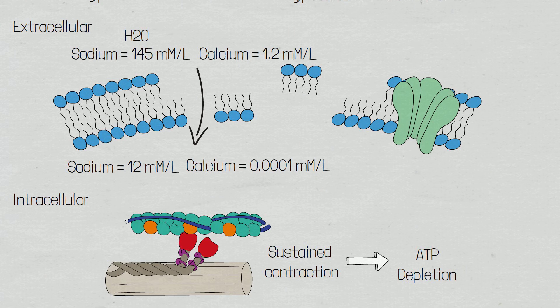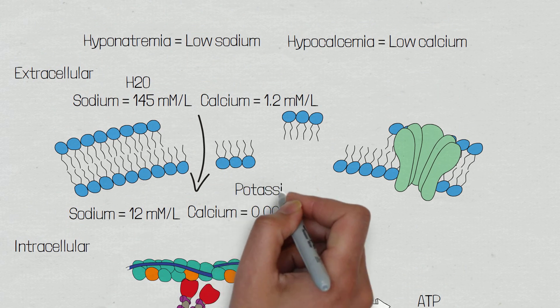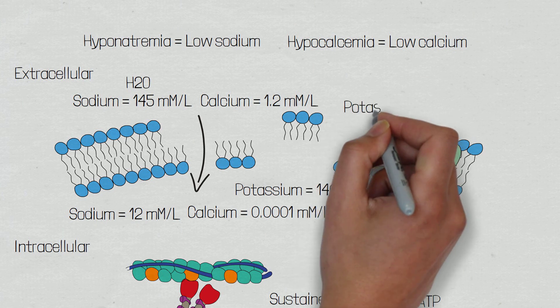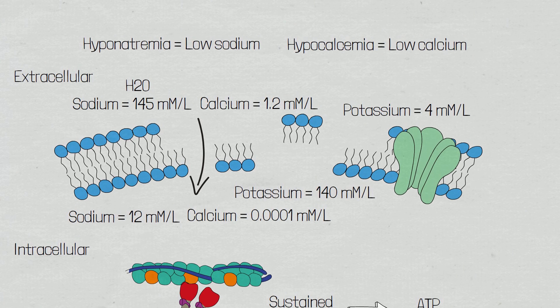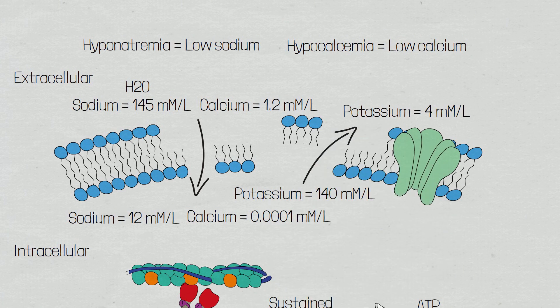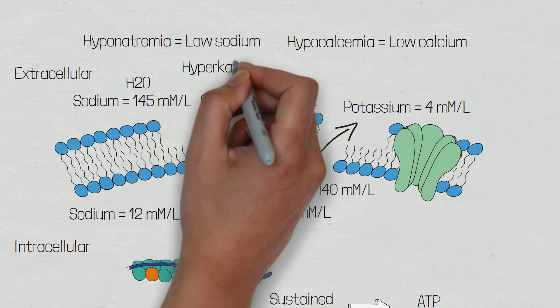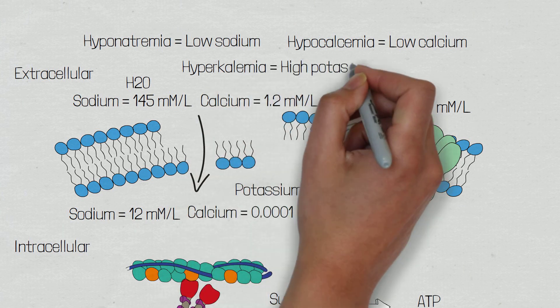98% of total body potassium is located within cells, with only 2% located in the extracellular space. When the muscle cell wall is damaged or ion channels can no longer function, potassium will move down its concentration gradient, leading to an increase in extracellular potassium known as hyperkalemia, which can lead to cardiac arrhythmias.